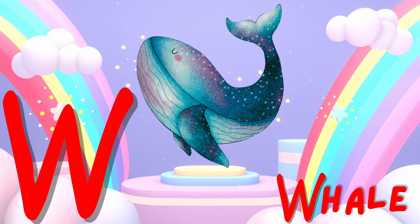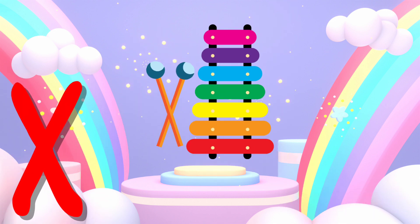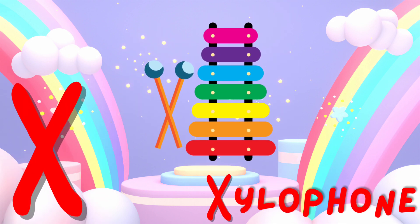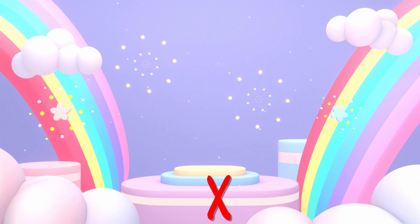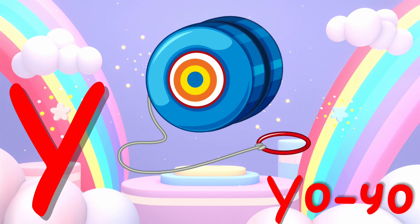W is for whale. This is a whale. X is for xylophone. This is a xylophone.